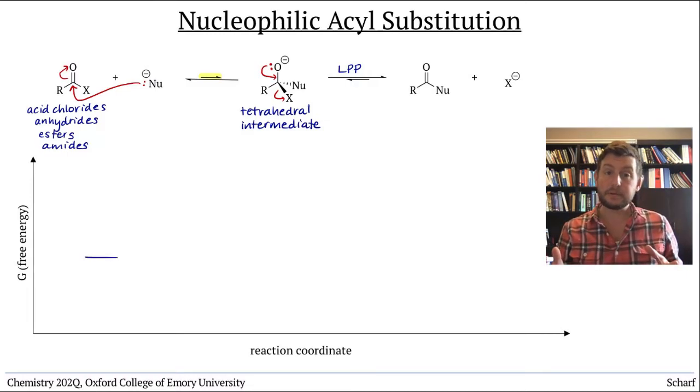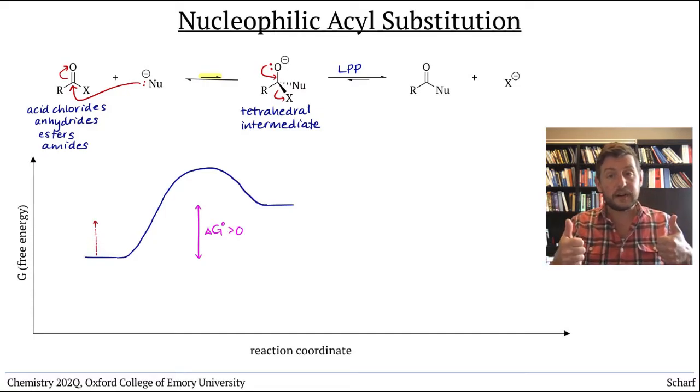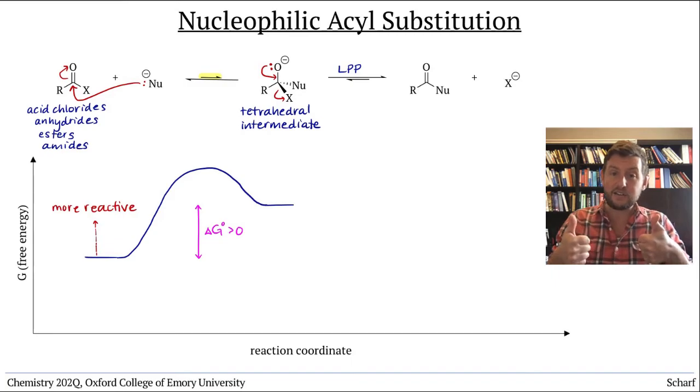The first step in this reaction, nucleophilic addition to π star CO, is usually pretty challenging. ΔG for that step is usually positive. But the more reactive the nucleophile, the higher energy its HOMO, or the more reactive the electrophile, the lower energy its LUMO π star CO, the easier this step is.